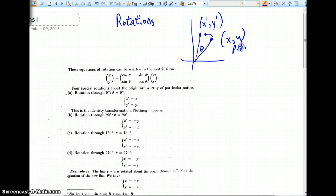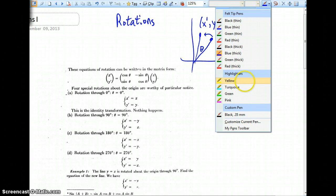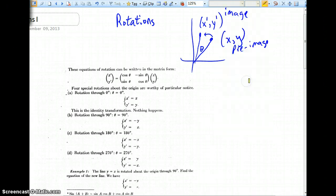This is called our pre-image for x comma y, where we would begin. x prime, y prime would be referred to as the image. What you're generally going to be working with is rotations that are counterclockwise, just as we would study in trigonometry. This is a very wonderful way to be able to find an image, given a pre-image, rotating it theta degrees about the origin.